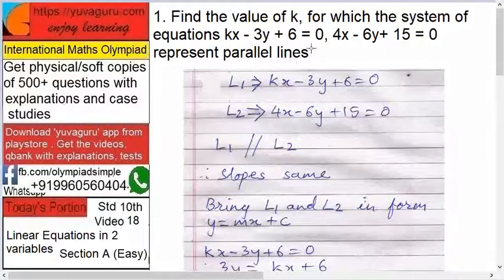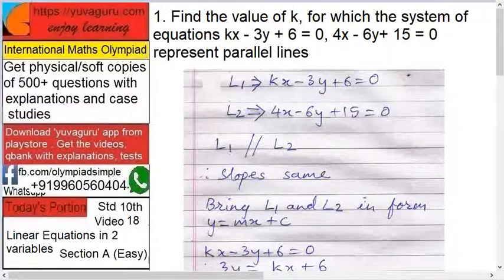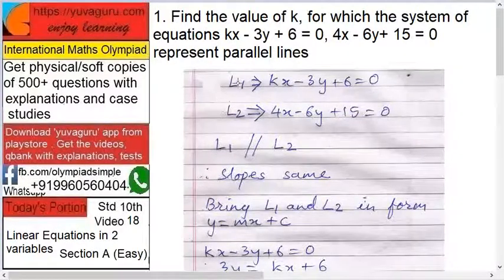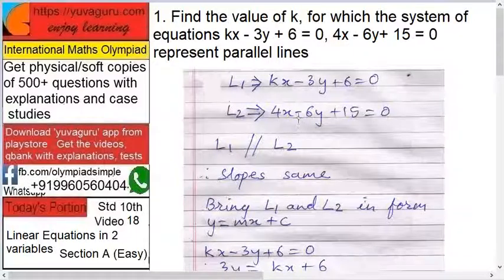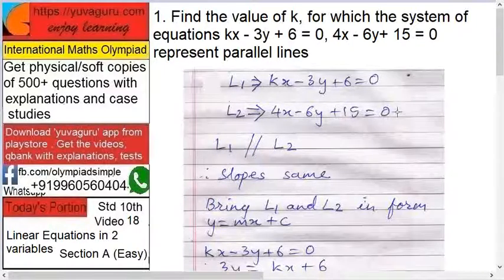If two lines are parallel, their slopes will always be equal. So line L1 and L2, kx minus 3y plus 6 and L2 is 4x minus 6y plus 15 equals 0.